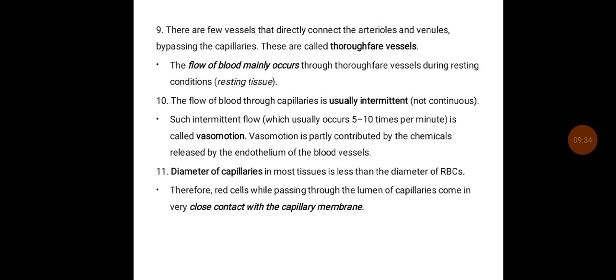There are a few vessels that directly connect arterioles to venules, bypassing the capillaries — these are called thoroughfare vessels. The flow of blood mainly occurs through thoroughfare vessels during resting conditions. The flow of blood through the capillaries is usually intermittent, not continuous. Such intermittent flow is called vasomotion, which is partly contributed by chemicals released by the endothelium of the blood vessels.